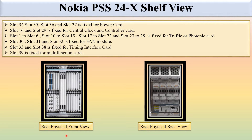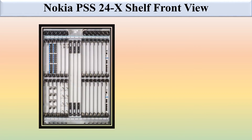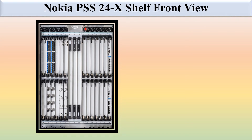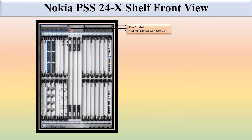Let's see the position of the slots in the real physical front view and rear view. This is the Nokia PSH 24-X front view. You can see slots 1, 2, 3, 4, 5, 6, 7, 8, 9, 10, 11, 12, 13, 14, 15, and 16 on the top, and on the bottom slots 17, 18, 19, 20, 21, and 22. There is one full-height slot area covering slot numbers 7, 8, 9, and slots 23, 24, 25, 26, 27, 28, and 29.